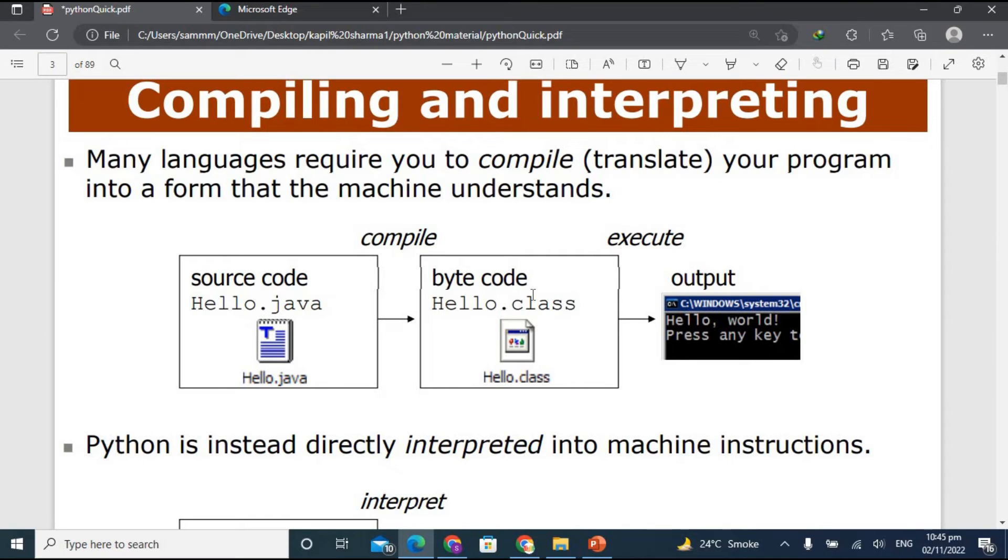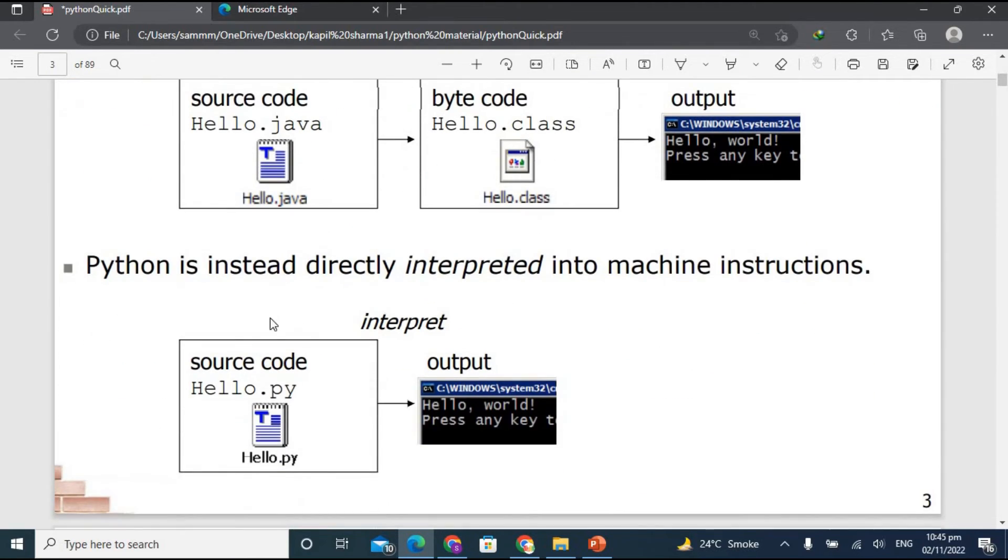It will first compile into byte code. Byte code means our source code will be converted into 0110 form, translated. So computer first translates the source code into its own language which a computer can easily understand, which is byte code, and after that it will execute the output.